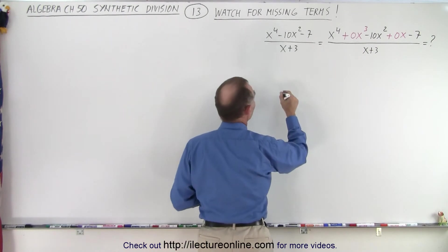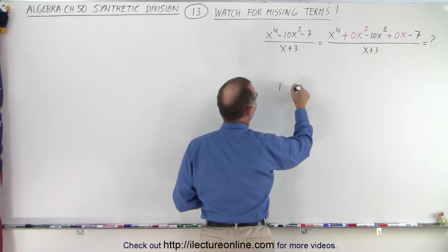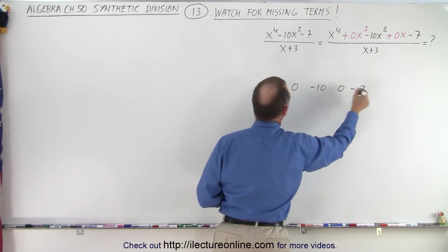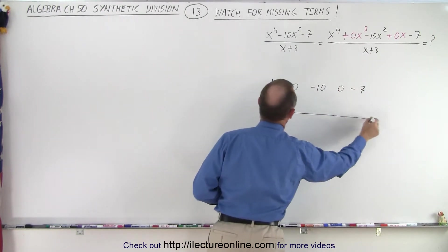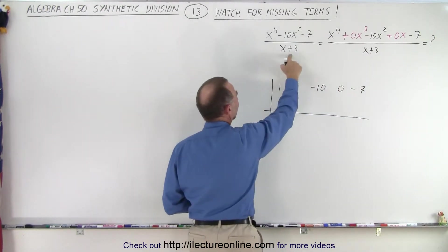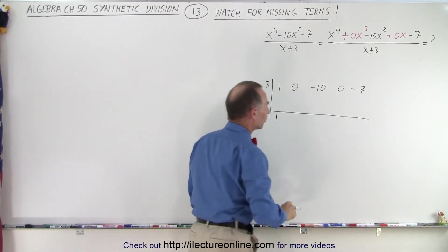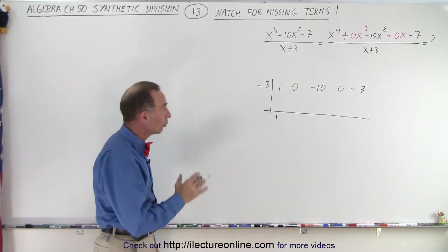So we get the following. This becomes 1, 0, minus 10, 0, and minus 7. We'll put the two lines down on the left side. We get the negative of that number, which is negative 3. Then we drop the first number down, which is 1. And now we're ready to solve this problem.